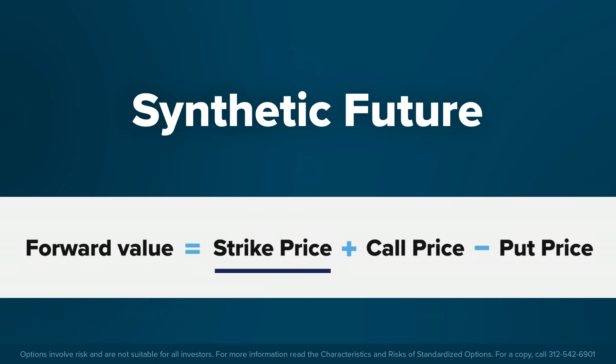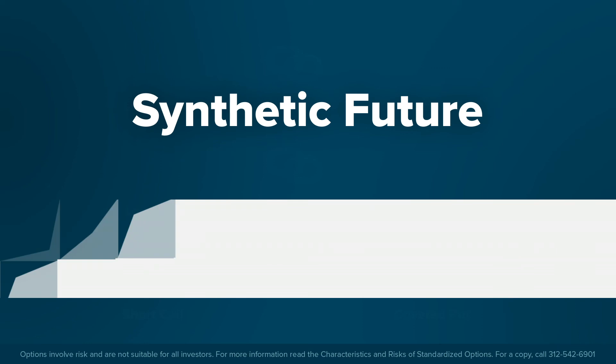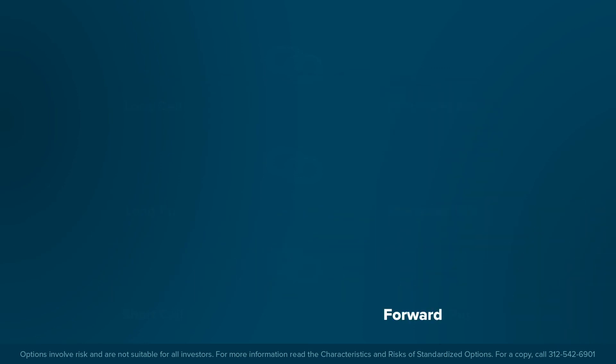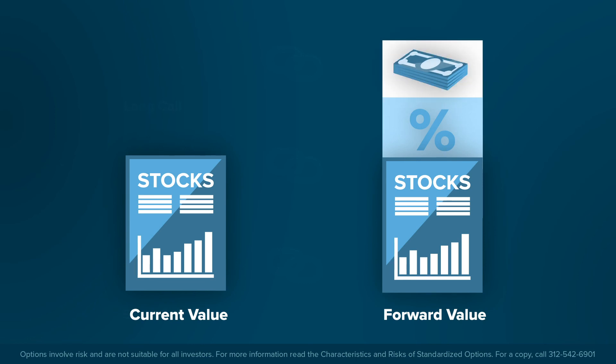The forward value equals the strike price plus the call price minus the put price. The difference between the forward value and the current value of a stock is a function of interest rates and dividends. Because option prices are based on the forward value of the underlying product, it is crucial that options investors consider the effects of dividends and interest rates when implementing their strategies.